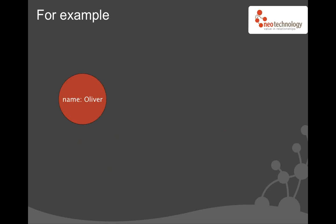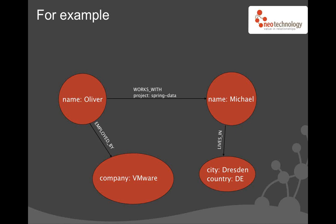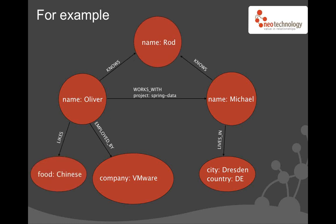For example, there's Oliver, who is the lead of the Spring Data JPA and Spring Data MongoDB project and also lives in Dresden. We both work together on the Spring Data project. I live in Dresden. Oliver is employed by VMware. We both know Rod Johnson, and Oliver also likes Chinese food. There's lots of different data in the same single graph, and this data allows us to derive very interesting information. If you cut this up into separate graphs, you lose lots of the richness of the domain.